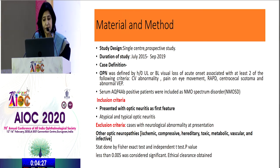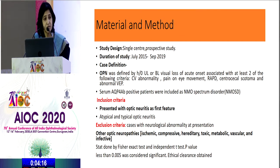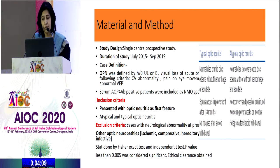This was a single-center prospective study done over a three-year period. Optic neuritis was defined, and serum aquaporin-4 antibody-positive patients were included as NMO spectrum disorder. Patients who presented with optic neuritis as a first feature were included. Those who had neurological abnormality on representation were excluded along with other optic neuropathies. Typical and atypical optic neuritis was defined — those who had mild disc edema without much hemorrhage or exaggerated spontaneous resolution were considered to have typical optic neuritis.